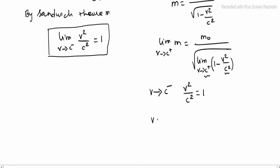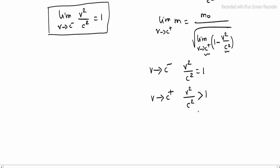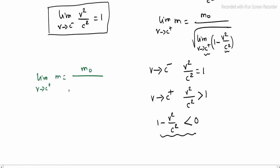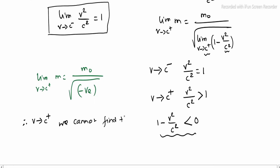When v tends to c plus, v squared divided by c squared is greater than 1. This means 1 minus v squared divided by c squared is less than 0 — it becomes negative. Taking the square root of a negative number means limit as v tends to c plus of m = m0 divided by square root of a negative number, which is not real. Therefore, the limit as v tends to c plus cannot be found — it is undefined.